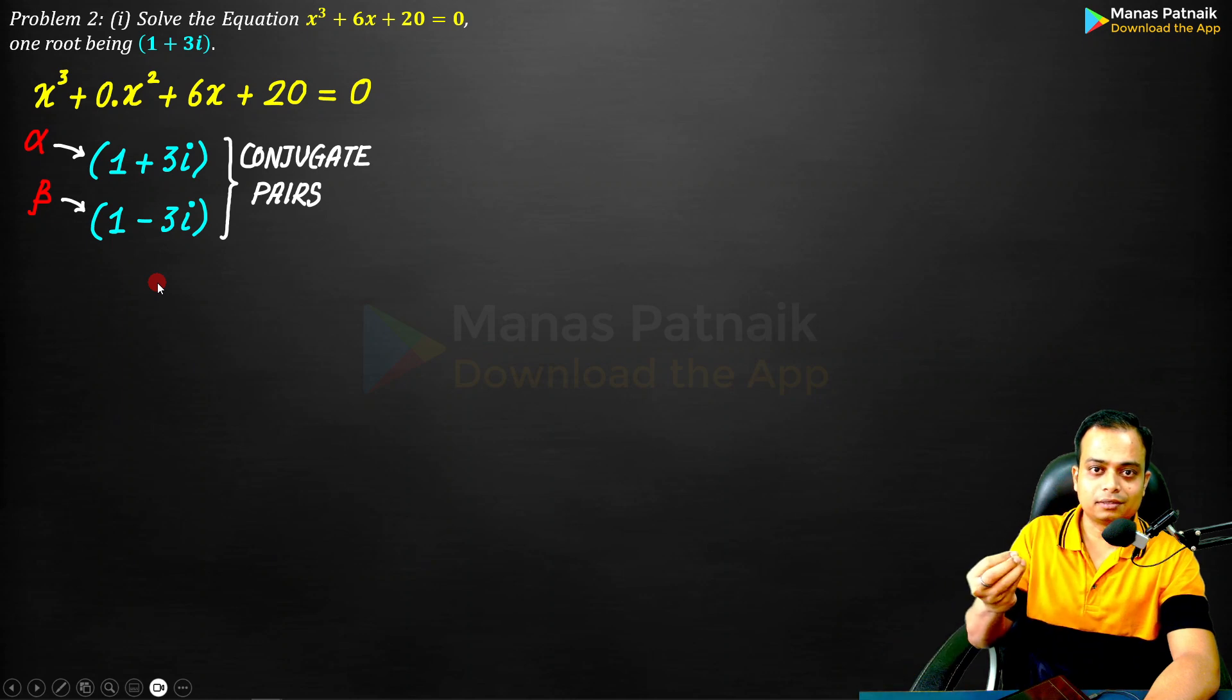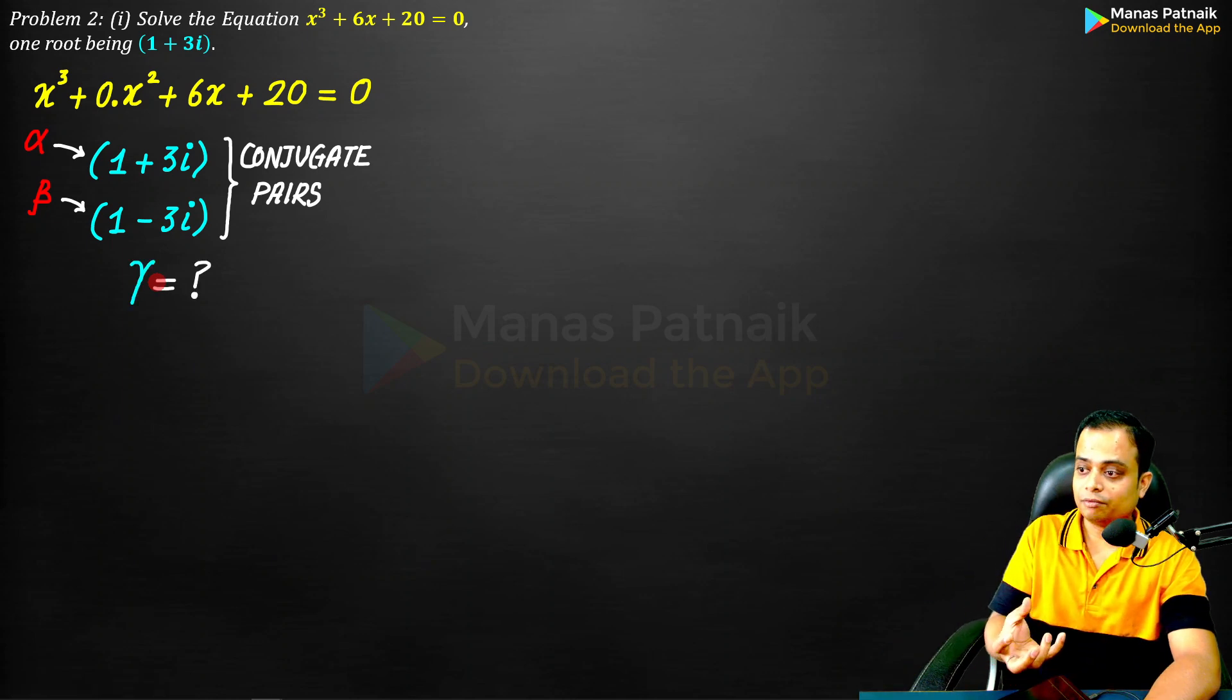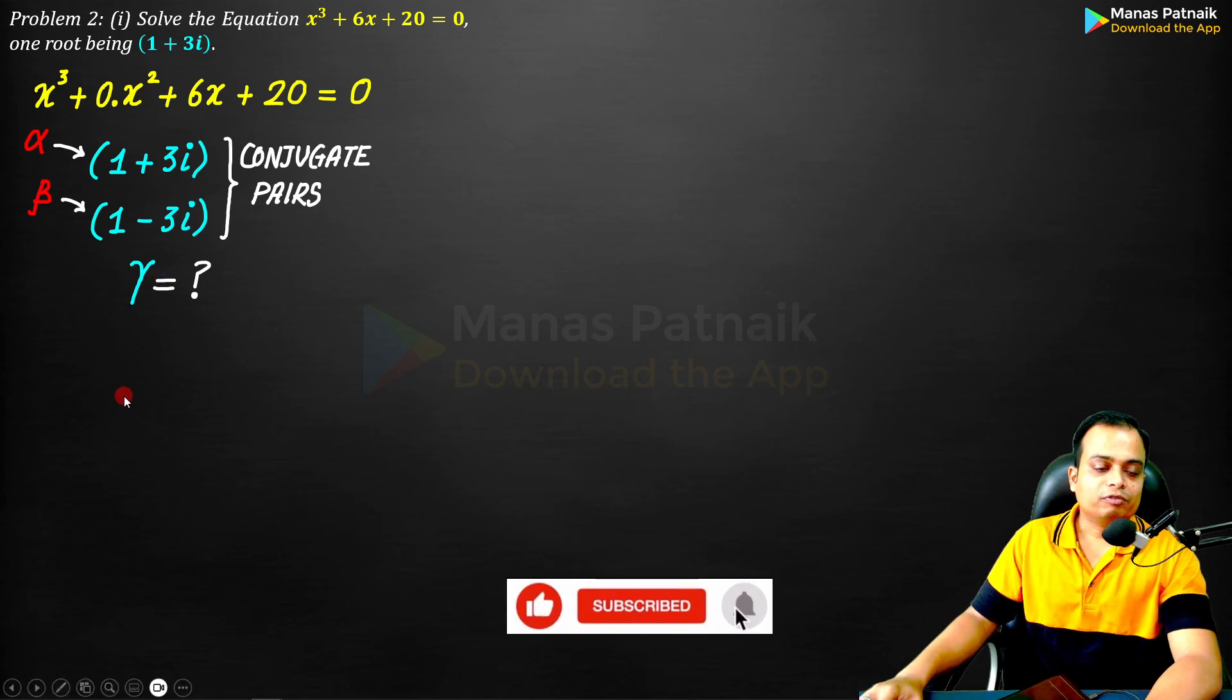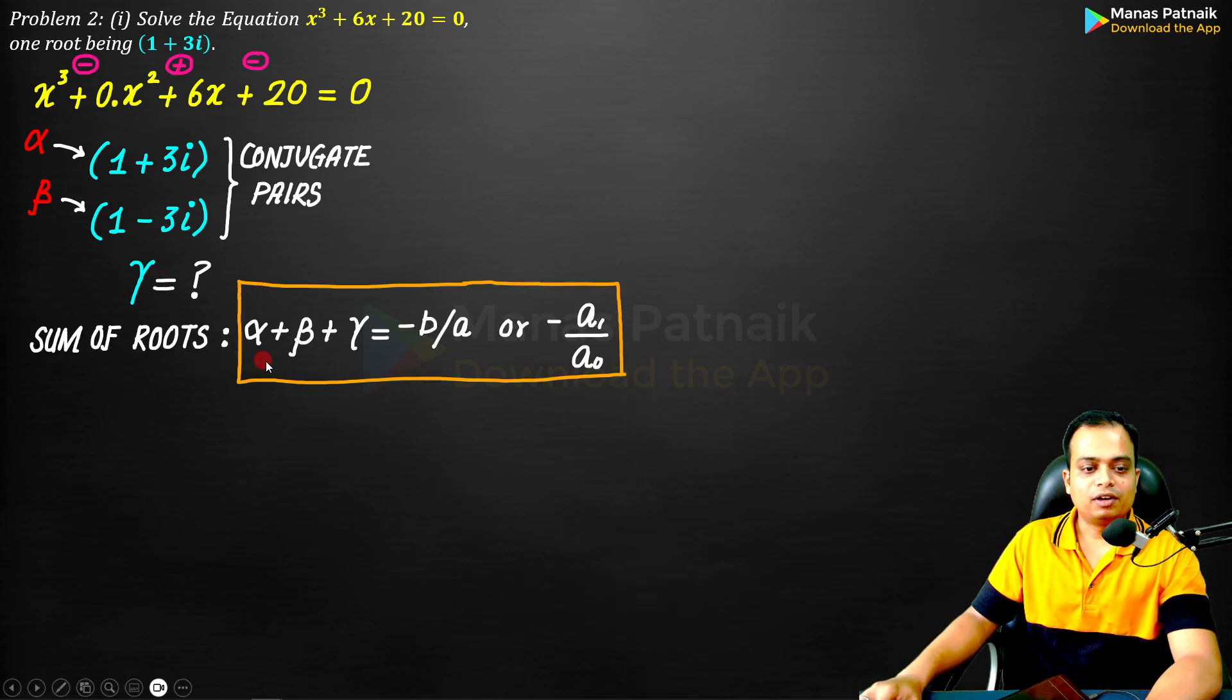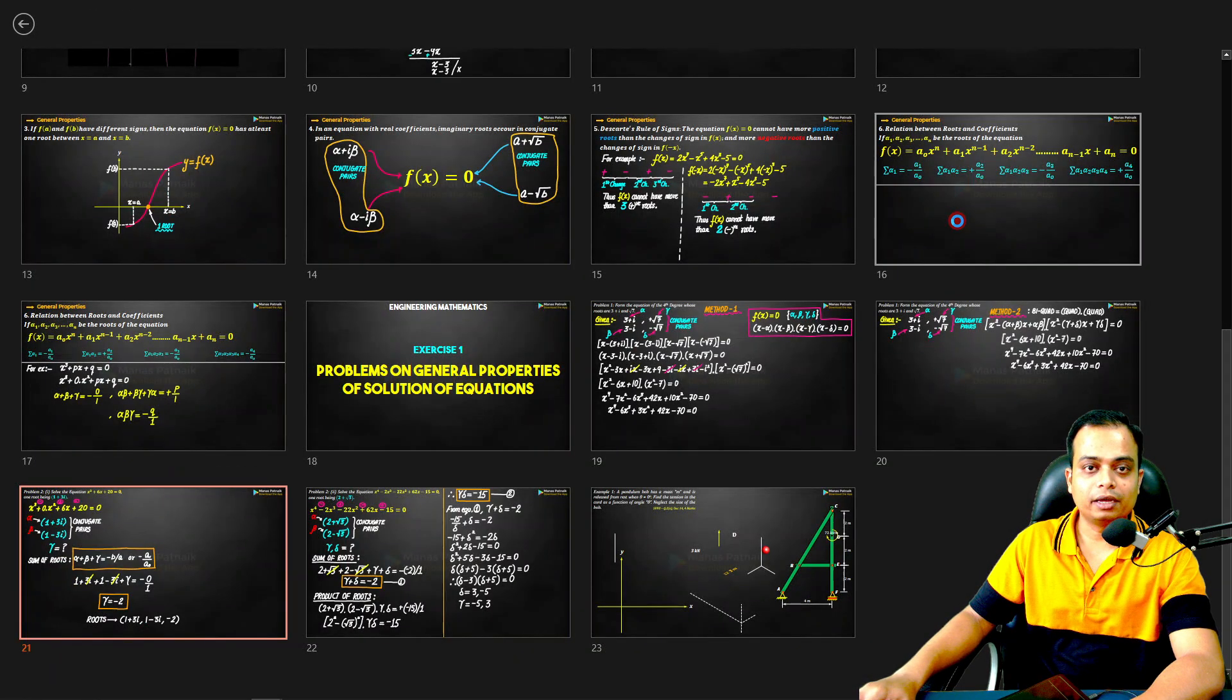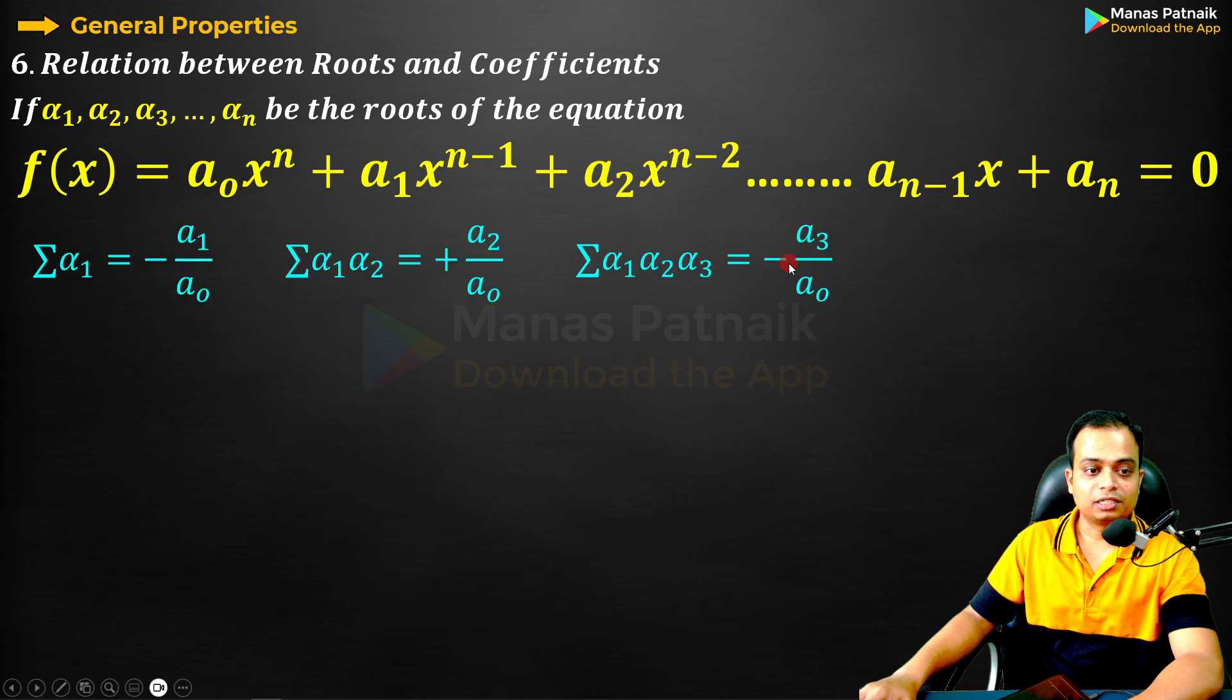Third root, let's assume it as gamma, whose value is something we will work out. First of all, go for sum of the roots. Alpha plus beta plus gamma is equal to -b/a or -a₁/a₀. This is something you can refer to from the first lecture.